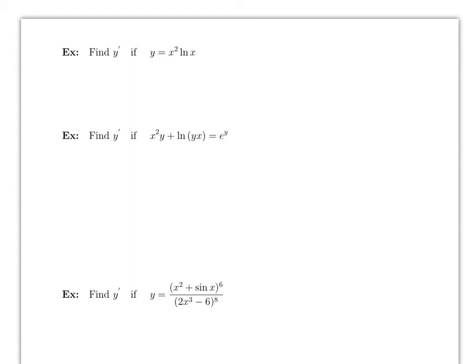Now that we know the derivative of ln x, we can combine it with previous derivative rules. For example, consider y = x²·ln x — this is a product. Using the product rule: the derivative of the first times the second is 2x·ln x, plus the derivative of the second (which is 1/x) times the first (x²), giving 2x·ln x + x. Also remember: ln(yx) = ln y + ln x — don't forget that property.